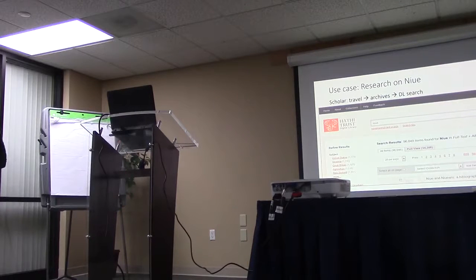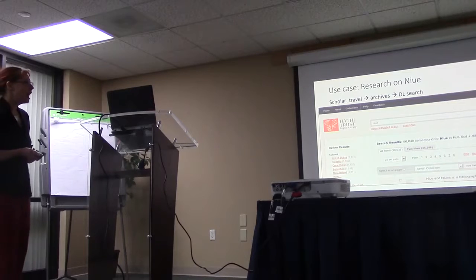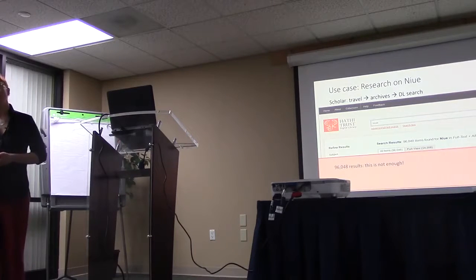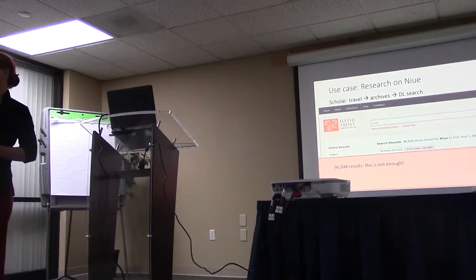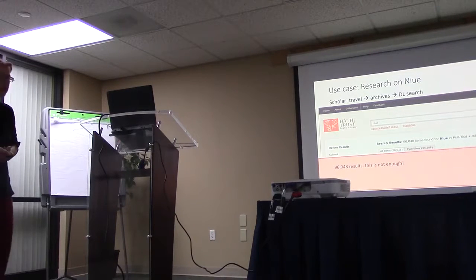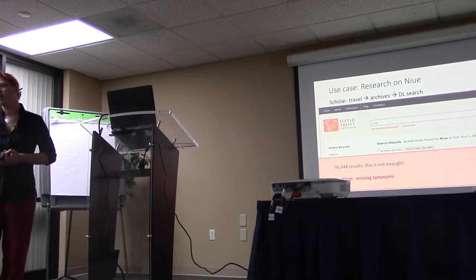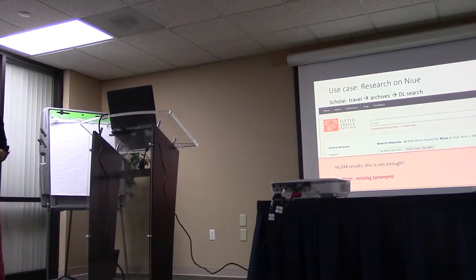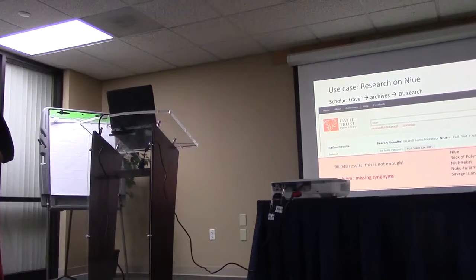So let's assume we do that. So we use the HathiTrust Digital Library, search for Niue, and what we find is 96,000 items. 96,000 items actually isn't enough. I have no idea how you would then go through all 96,000 items as a scholar, but it definitely isn't enough, because what it does not take into consideration is all the synonyms. You think, what do you mean? Niue is an island with a name. Well, actually, even island names have synonyms.